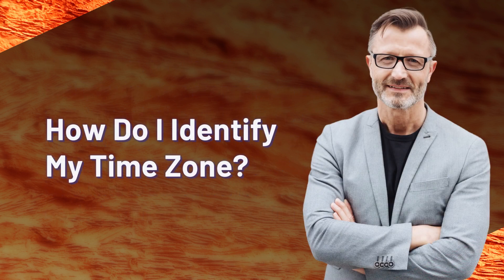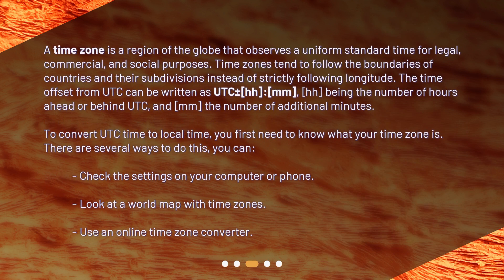How do I identify my time zone? A time zone is a region of the globe that observes a uniform standard time for legal, commercial, and social purposes. Time zones tend to follow the boundaries of countries and their subdivisions instead of strictly following longitude. The time offset from UTC can be written as UTC plus or minus HH:MM, HH being the number of hours ahead or behind UTC, and MM the number of additional minutes.